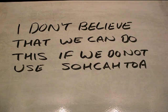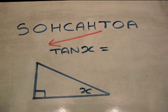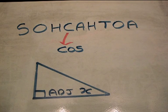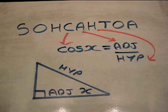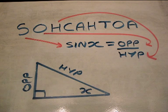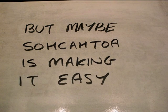Now that we've found the missing side. Tan of X is opposite over adjacent. Cos of X is adjacent over hypotenuse. And sin of X is opposite over hypotenuse as well. But it seems so hard — but maybe SOH-CAH-TOA is making it easy.